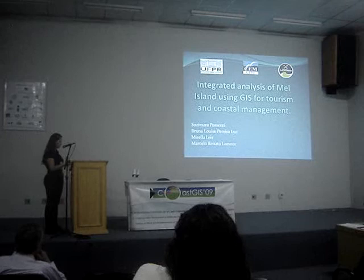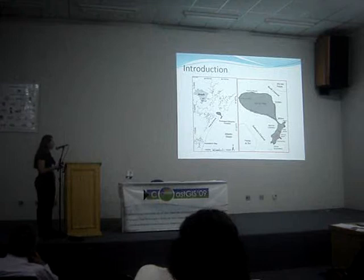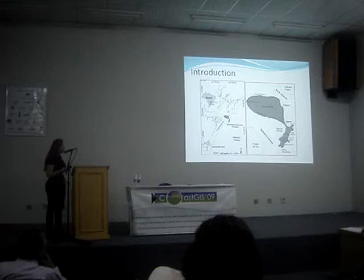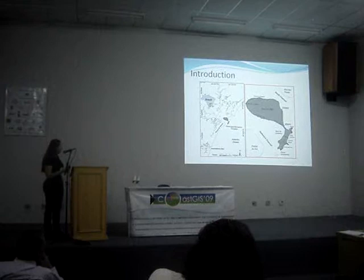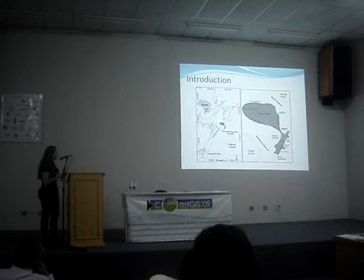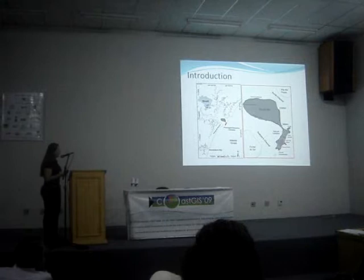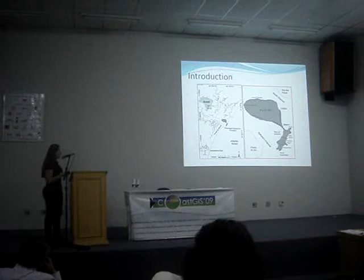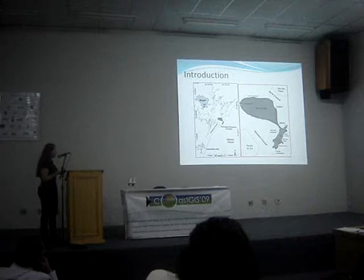Introducing the study area, Mel Island is located at the Paranaguá Estuarine Complex and it divides this estuary in two channels: the North Channel and the Galhetas Channel in the south. Ilha de Mel is a very important tourist destination in Paraná, and it also has two conservation units, which creates several problems with land use, because tourism and conservation are usually in conflict.